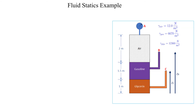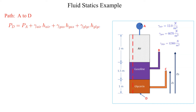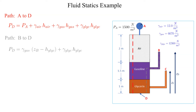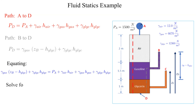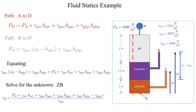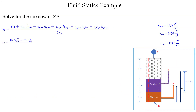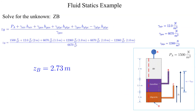Now let's repeat the process. We will still use the equation for the pressure at point delta obtained along the path from point alpha to delta. We'll equate that to an expression for the pressure at point delta obtained along the path from point bravo to delta. Once again we equate the two expressions for the pressure at point delta and solve for the unknown. In this case the unknown is the elevation of point bravo. Subbing in the values and units we obtain that the elevation at point bravo is 2.73 meters.